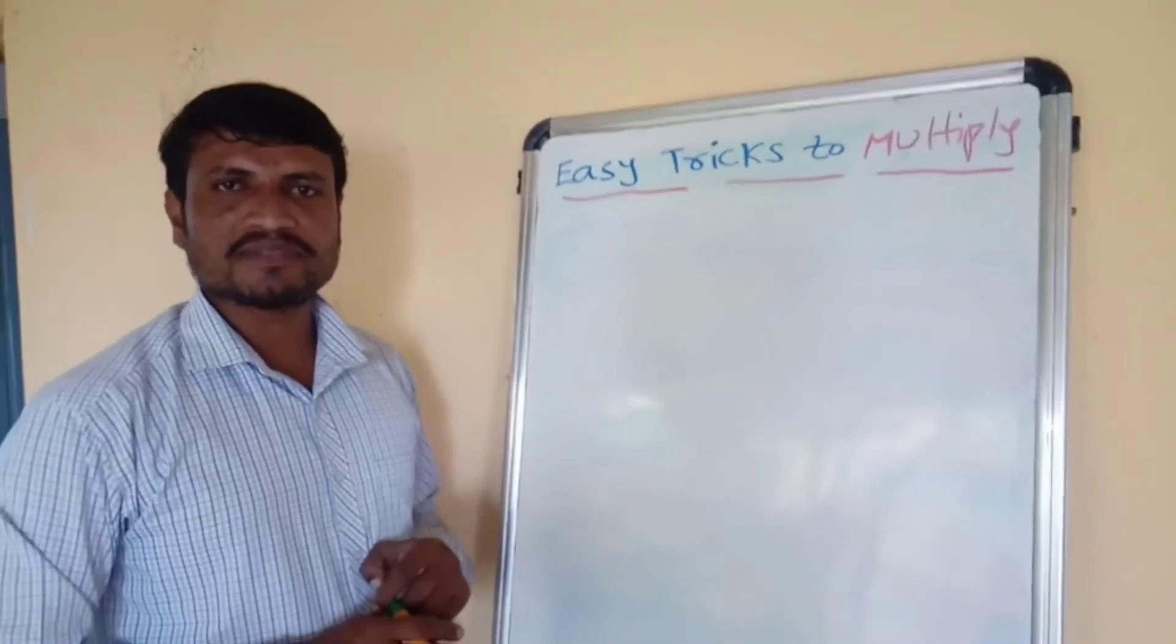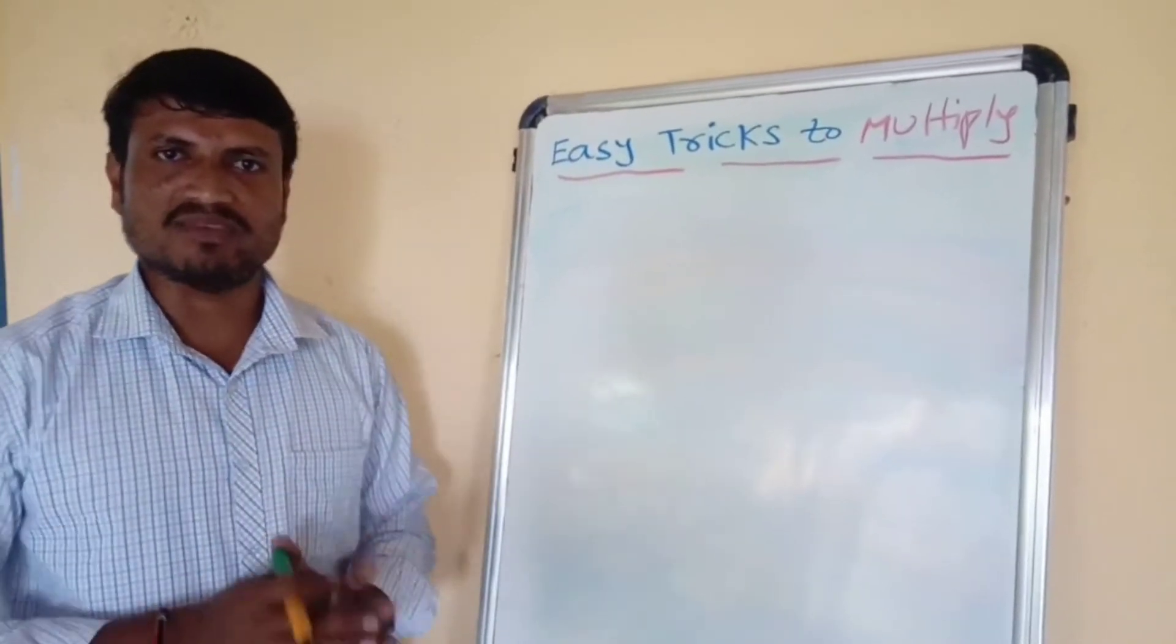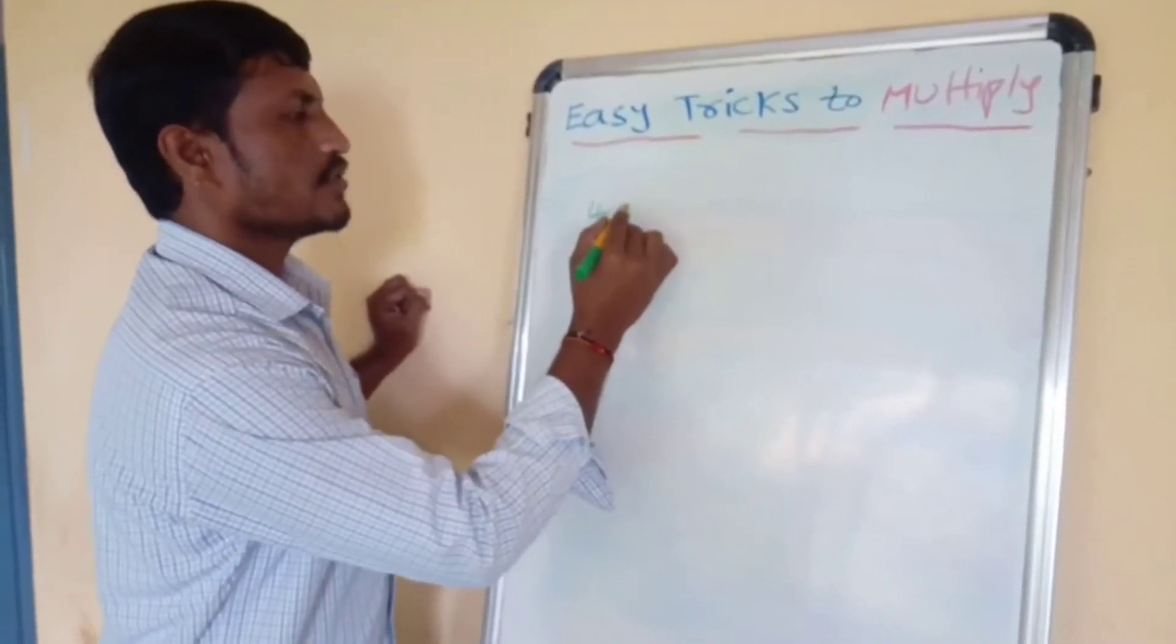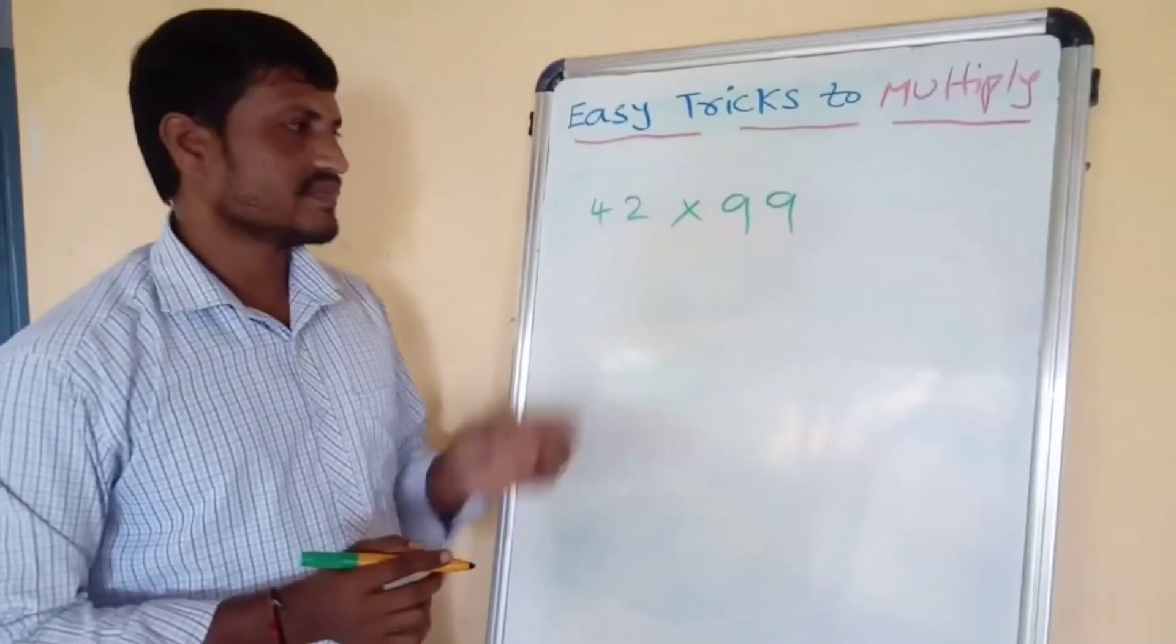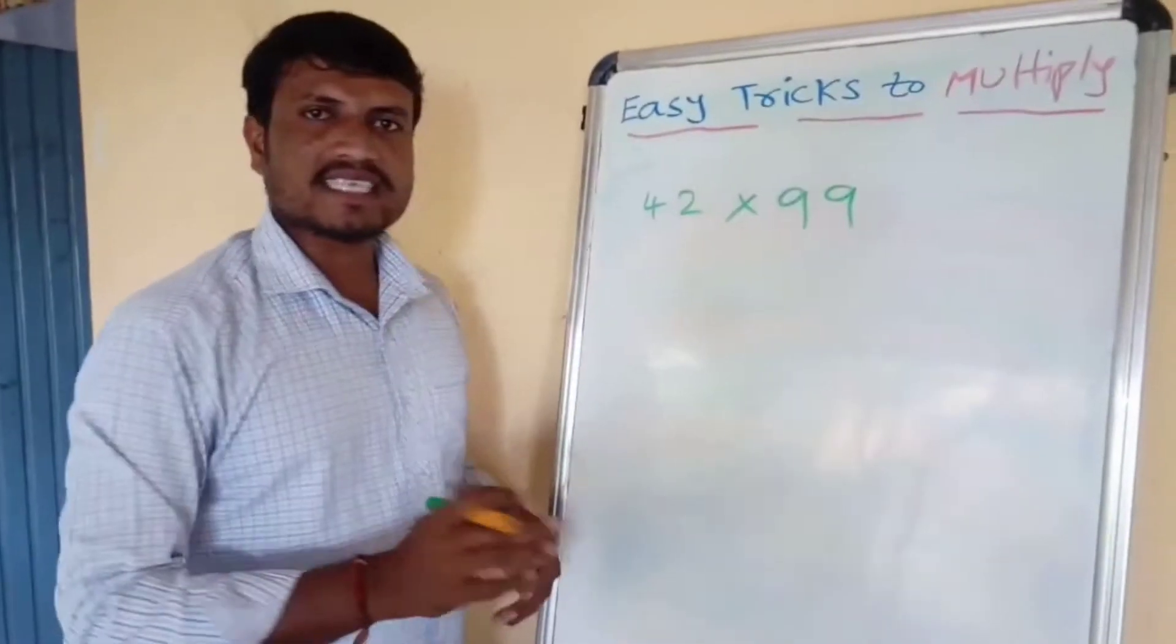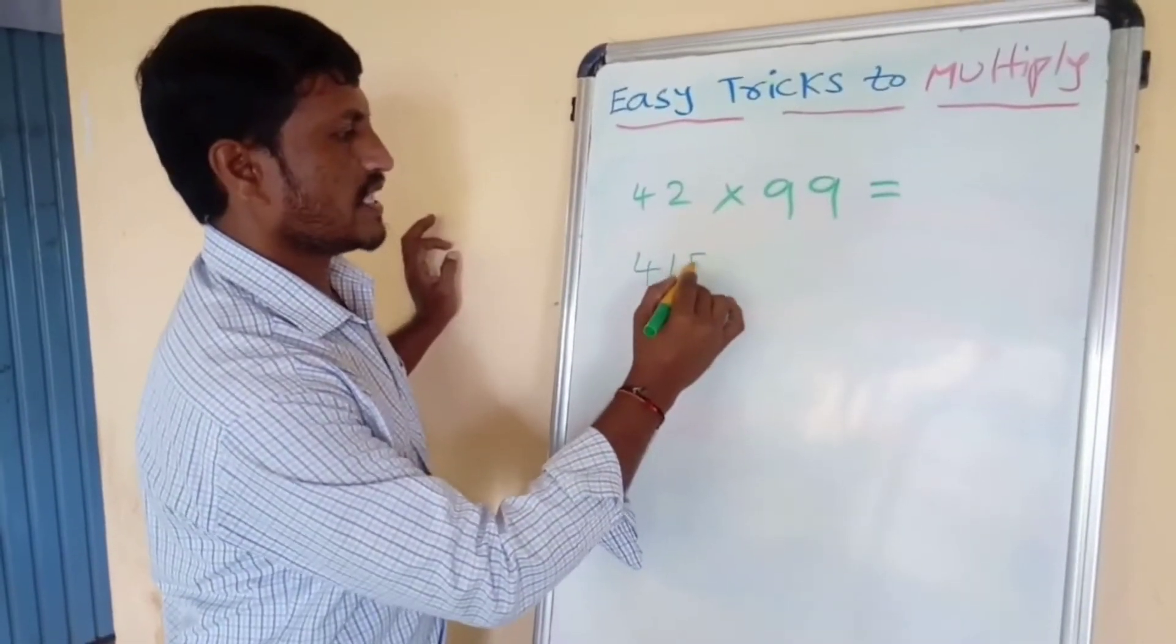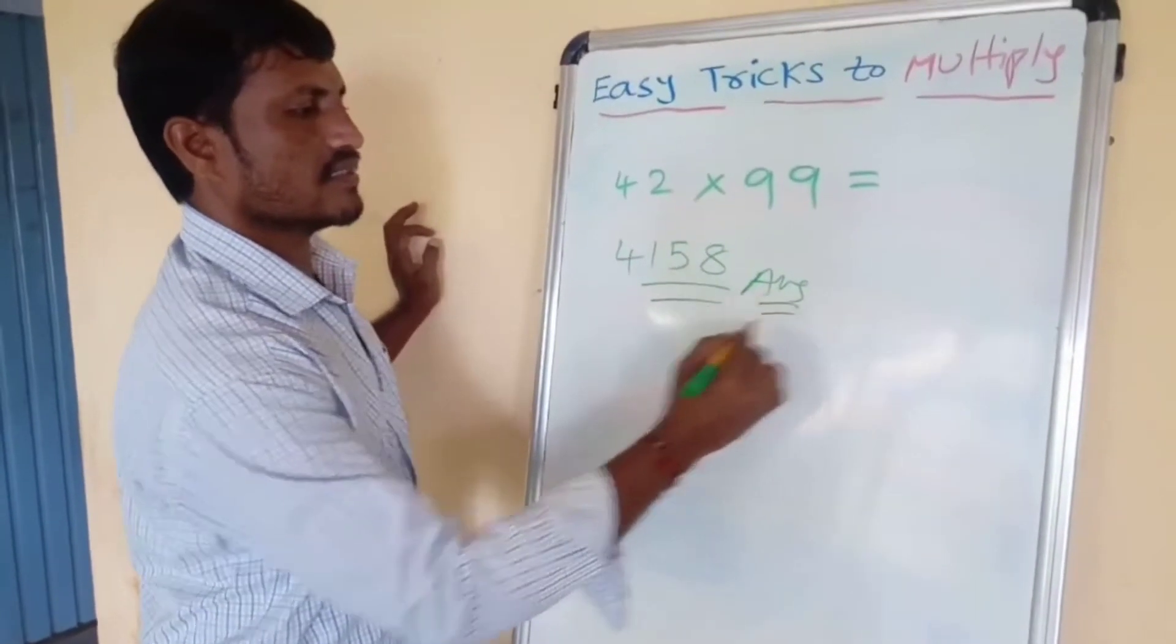Good morning, all of you. Today we learn about multiplying any number with nine. For example, 42 times 99, how much? I can say in three seconds. Can you say? Example: 4158. Yes, this is the answer.